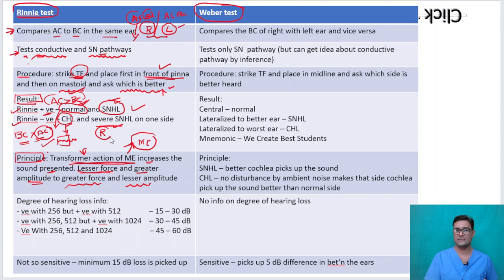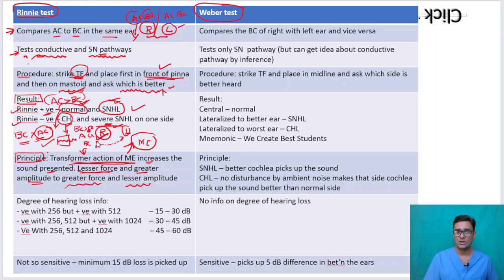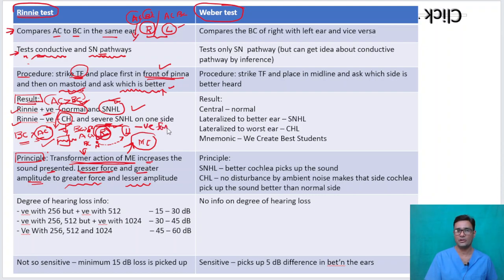For example, a patient with right-sided severe sensorineural hearing loss: you place the tuning fork in front of the right pinna and he says he cannot hear anything via air conduction. You then place it on the mastoid to test bone conduction, and because of transcranial transmission of sound to the left ear, he says he can hear. So you would say bone conduction is better than air conduction — but this is actually a false negative Rinne's, not true conductive hearing loss.